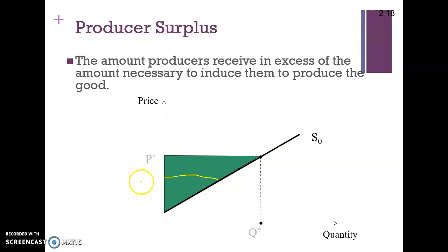For example, if the price decreases from P-star to P, the producer surplus decreases from the whole area to only a smaller area. Simply put, the difference between the supply curve and the price represents the producer surplus, and the difference between the demand curve and the price represents the consumer surplus.